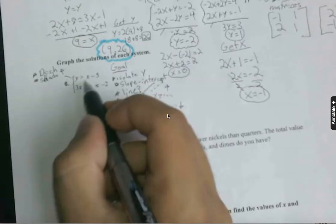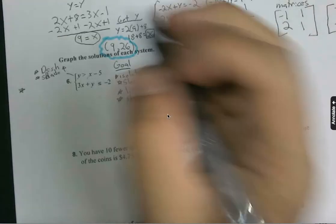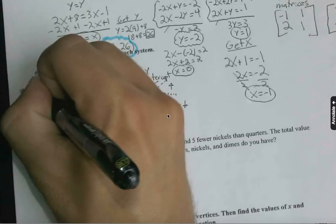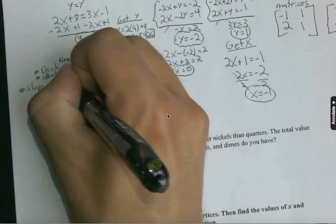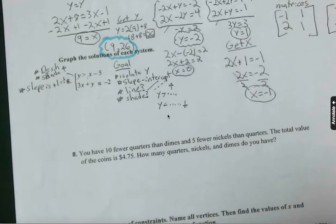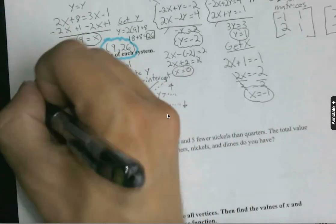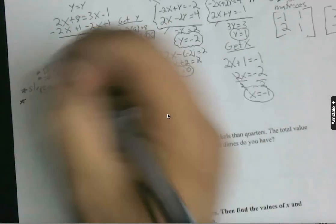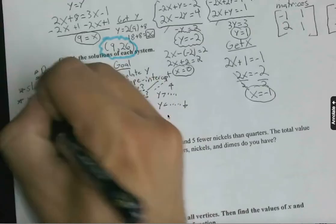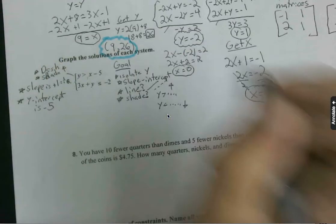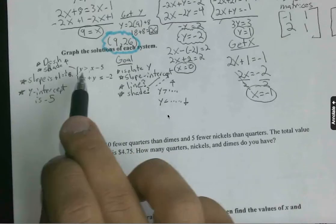I know my slope's going to be positive one, although it's not written we can assume that that's the imaginary coefficient. So the slope is positive one, or if you want to write it as a fraction to use rise over run, one over one. Y-intercept is negative five, and so that's kind of nice for that first equation. It's already isolated for y.